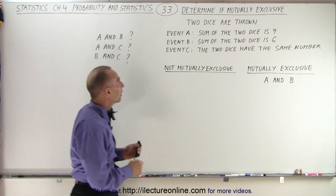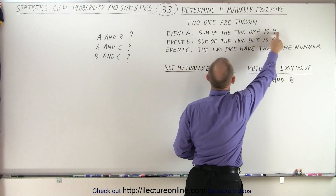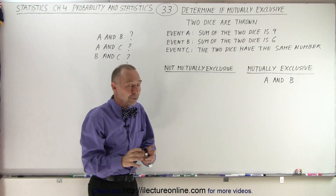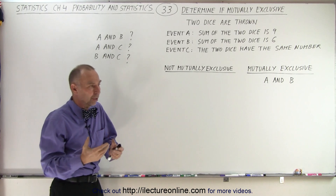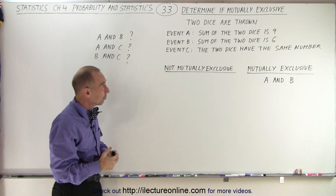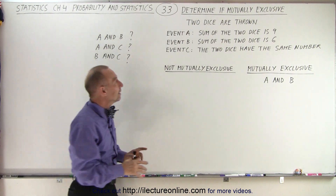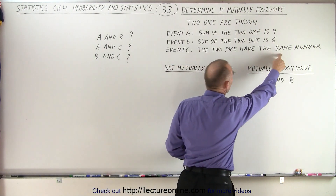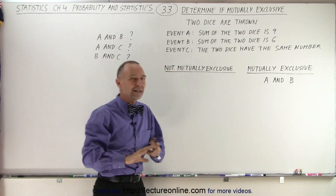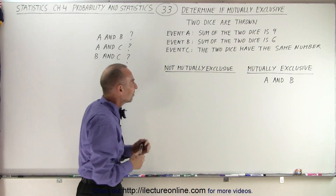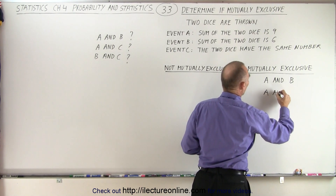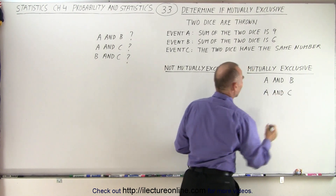What about A and C? The sum of the two dice equals nine and the two dice have the same number. Now if two dice have the same number you end up with an even number: one plus one is two, two plus two is four, three plus three is six, and so forth. So there's no way you can throw two dice and have the same number on both dice and have them add up to nine. That is not possible — they cannot happen at the same time. So A and C are also mutually exclusive.